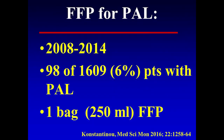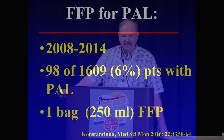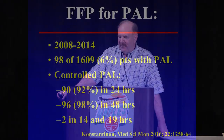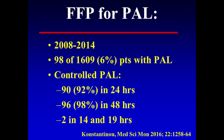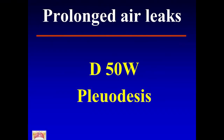Fresh frozen plasma has been reported for treatment of prolonged air leaks. In a series of 1,609 patients where 6% developed a prolonged air leak — that's 98 patients — one bag of 250 ml fresh frozen plasma was used. Of those patients, 92% sealed their air leak within 24 hours, and by two days post-op 98% had completely sealed. Some patients sealed as quickly as 14 to 19 hours after the first dose, so it can happen very quickly and effectively.